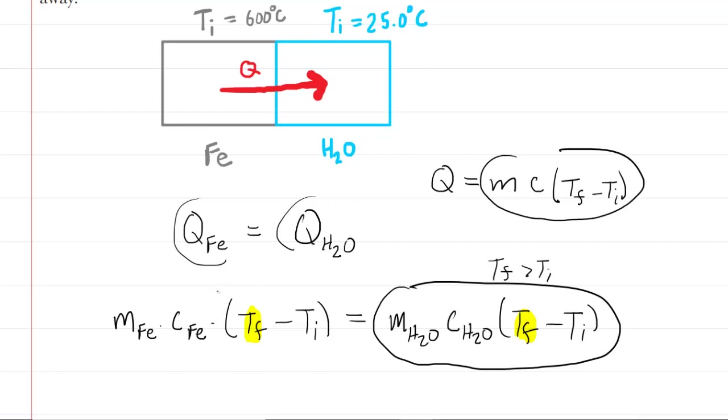For the iron, on the other hand, it's cooling down because it's losing heat. That means the final temperature of the iron will actually be less than the initial temperature, which means that this quantity will end up being negative. We cannot set a negative quantity on the left side equal to a positive quantity on the right side. That wouldn't make much sense. So what we have to do in order to establish a mathematically sound equation is to actually negate one side of the equation.